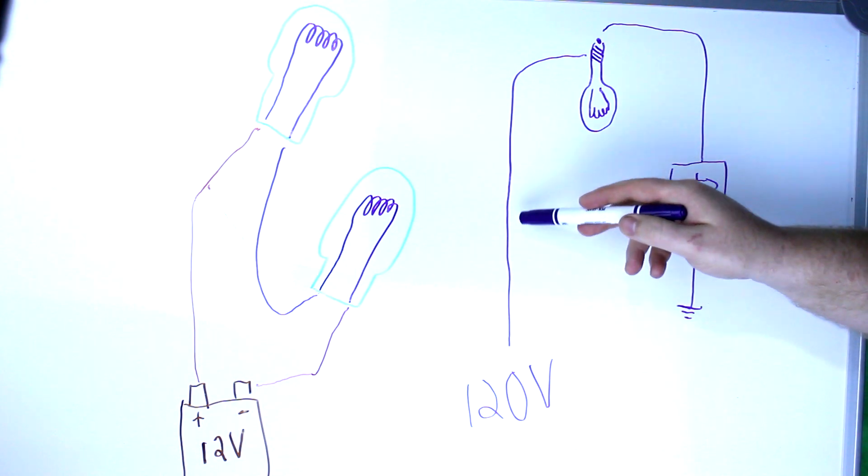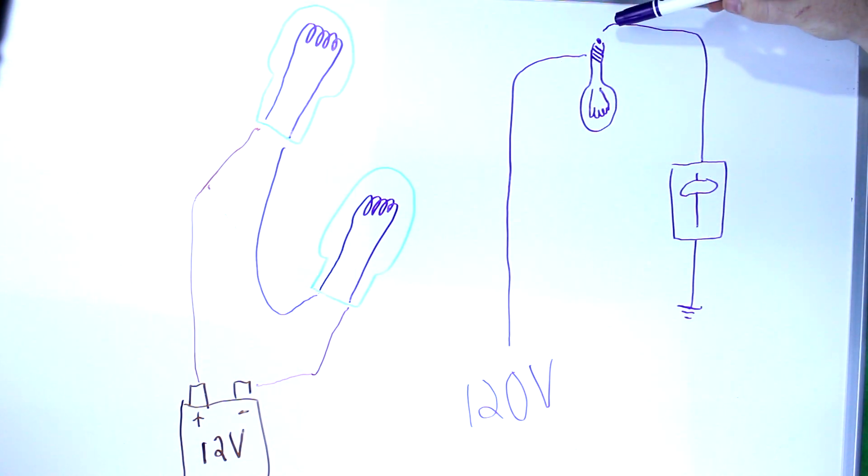Think of how that works. You've got power coming in, powering the bulb, and then it goes through to your dimmer switch. You can raise and lower this dimmer switch, and what it's doing is changing the resistance inside. The higher the resistance, the less that bulb glows.